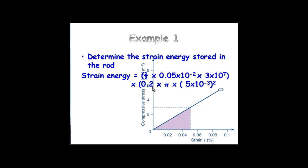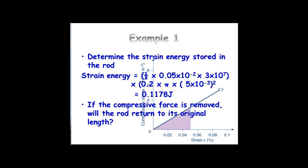Multiply by the dimensions of the rod — it was 20 centimetres, so it needs to be in metres — times pi r squared. The radius is 5 millimetres because it was a 1 centimetre diameter. Questions keep coming up with diameter, so please be aware of that when you're doing your questions. That gives us about 0.1178 joules. If the compressive force is removed, will it return to its original length? We're still in the elastic region, so you remove that force and it should go back to its original length.